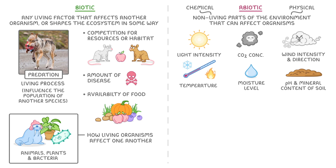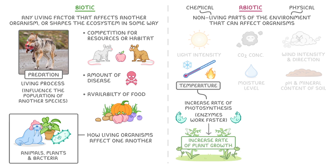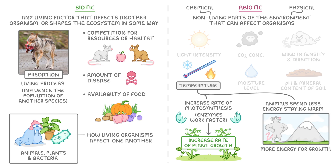So if we were to pick any one of these, we could hopefully explain what impact changing it might have on the environment. For example, an increase in temperature could increase the rate of photosynthesis, because the enzymes involved can work faster, and as a result there might be an increase in the overall rate of plant growth. It could also mean that animals have to spend less energy staying warm, so they might be able to use more energy for growth, or spend less time searching for food.